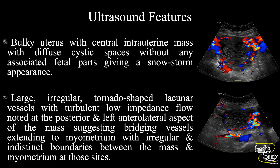In summary: a bulky uterus with a central intrauterine mass showing diffuse cystic spaces without any associated fetal parts, giving a snowstorm appearance, suggests gestational trophoblastic disease. Large irregular tornado-shaped lacunar vessels with turbulent low-impedance flow are noted at the posterior and left anterolateral aspects of the mass, representing bridging vessels extending to the myometrium with irregular and indistinct boundaries between the mass and the myometrium at those sites. These features confirm this as a case of invasive mole.